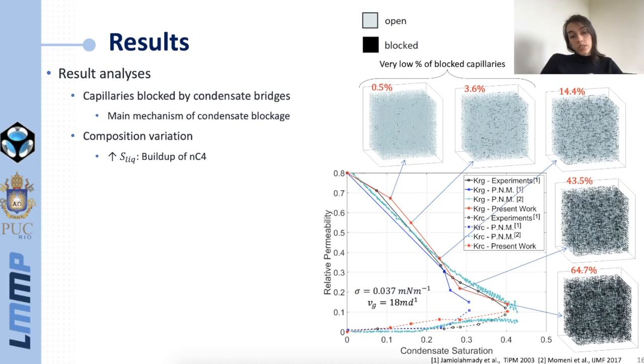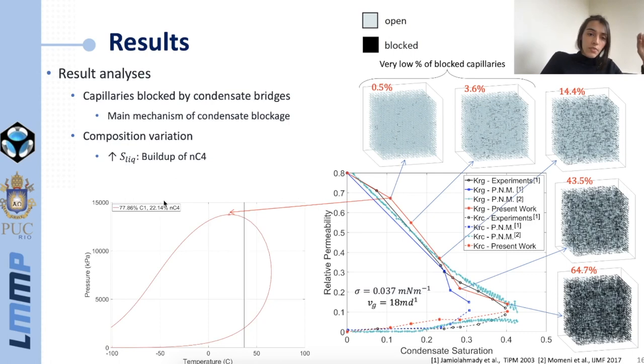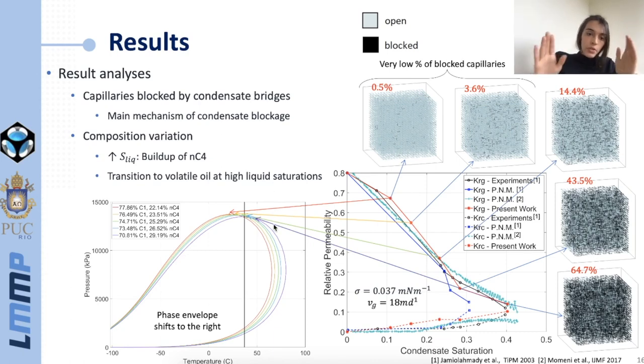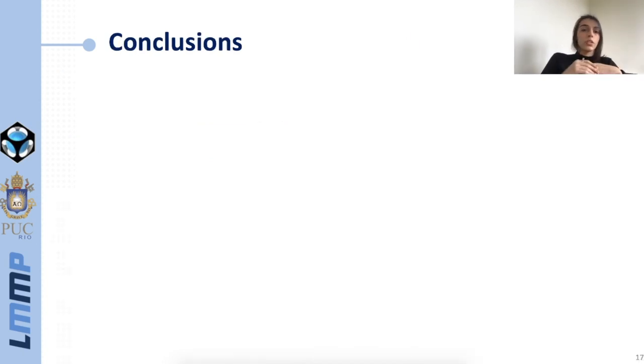The other thing that we evaluated was the composition variation in the network, because as the condensate saturation increases we have a buildup of the heavier components of the mixture which in this case is just butane. Again if we analyze the same points starting with this one, we can see that we have 22 percent of butane which leads to this phase envelope. The critical point is here and this line represents the simulation temperature. If we move in this direction, here we already have 23 and a half percent of butane, here 25, and with this accumulation the phase envelopes shift to the right. For those two last points here this shift was so big that we can see that now the critical point is to the right of the simulation temperatures, which marks the transition from gas condensate to volatile oil in the behavior of the phases.